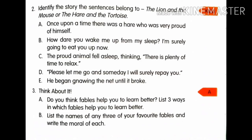Now let us go to the second question: identify the story. Decide whether each sentence belongs to The Lion and the Mouse or The Hare and the Tortoise. For example, 'Once upon a time there was a hare who was very proud of himself' — which story is that from? Go through the sentences carefully and write your answers. You can complete questions one and two in your textbook.